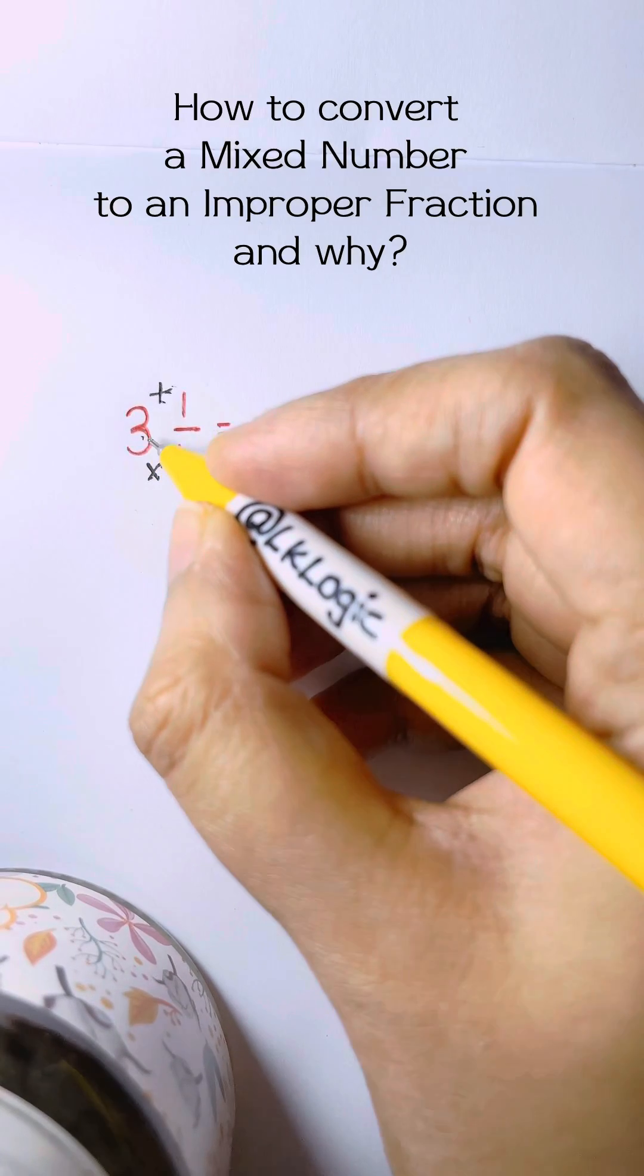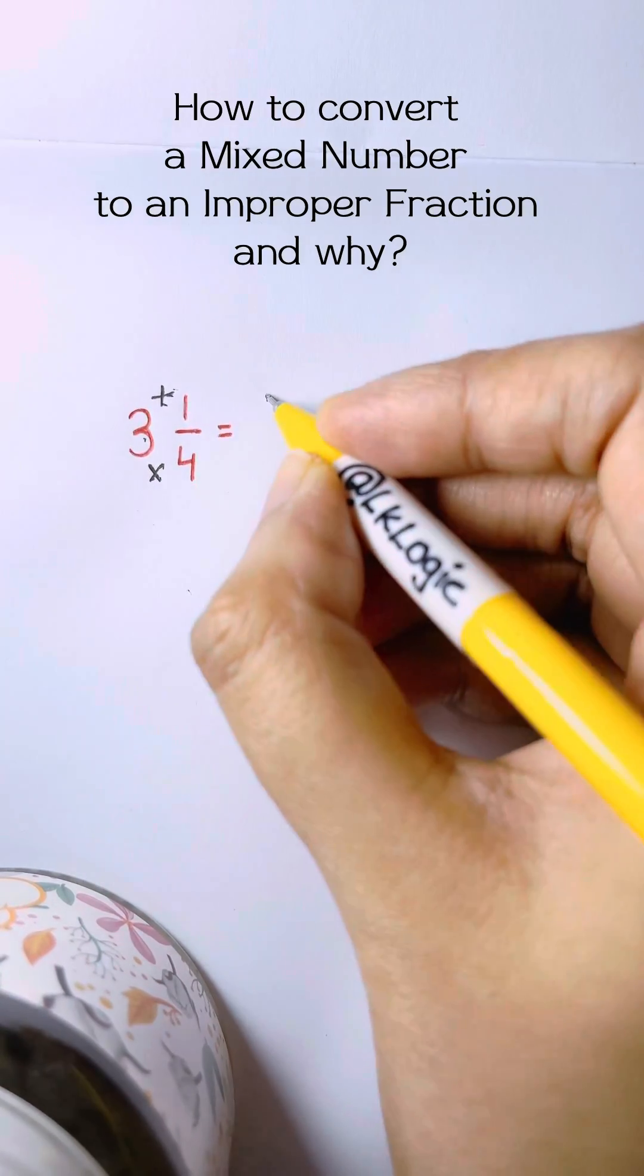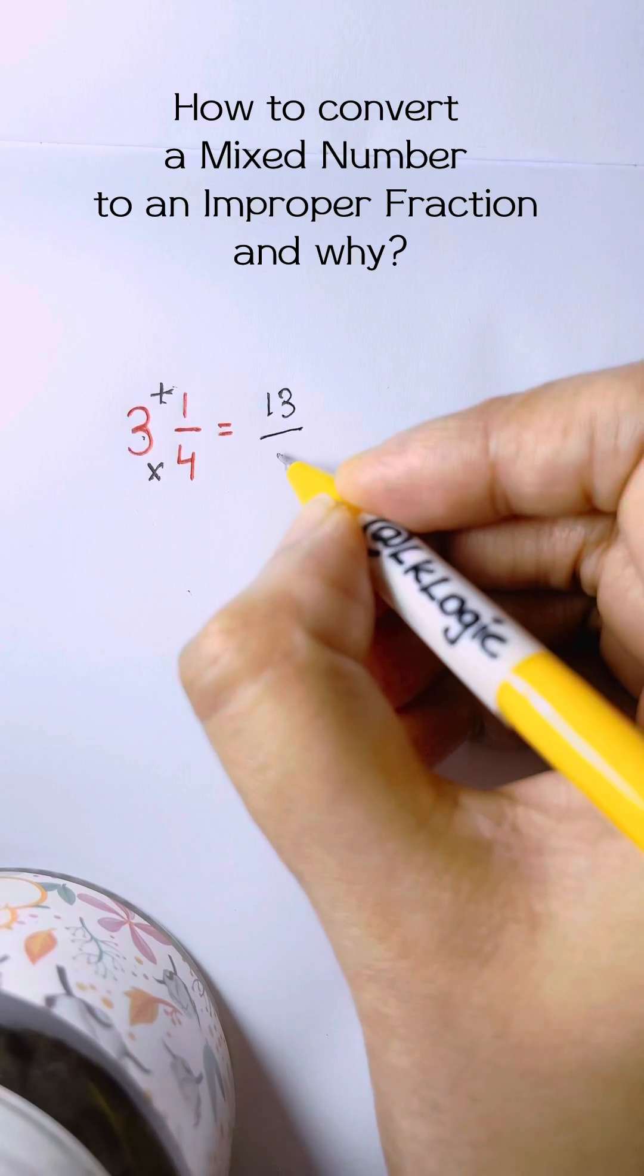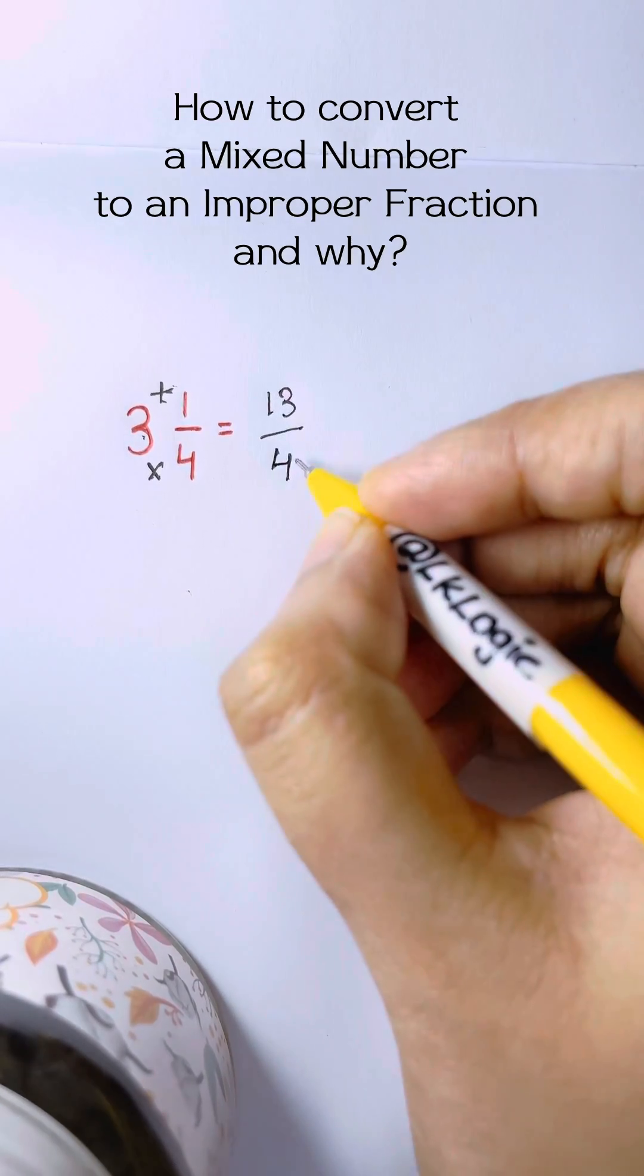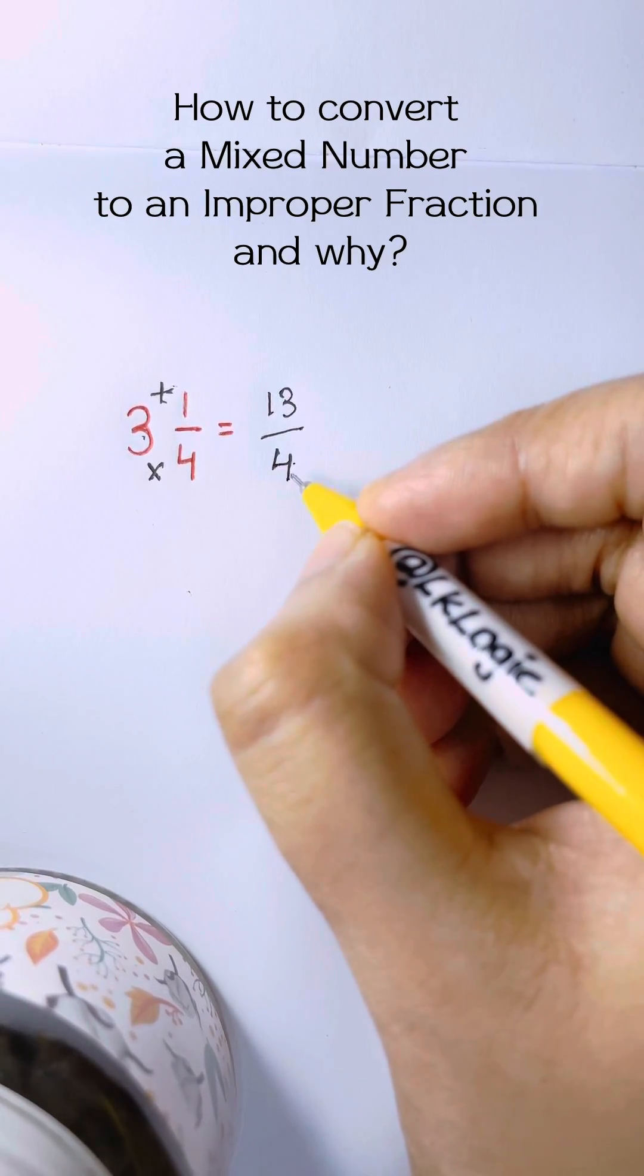So we have 4 times 3 equals 12 plus 1 which gives you 13. So we have a numerator of 13 and we keep the denominator as 4. It's the same.